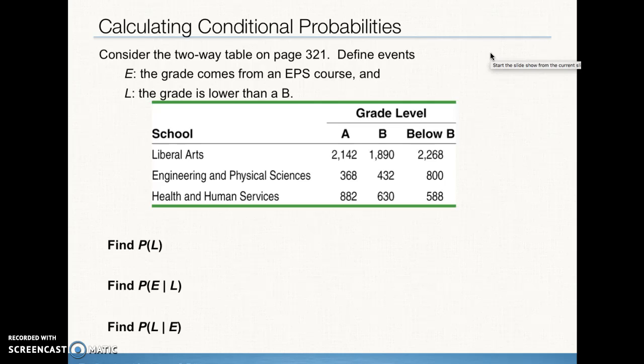The students at the University of New Harmony received 10,000 course grades last semester, and the two-way table we see here breaks down the grades by which school at the university taught the course. The choices of the schools are liberal arts, engineering and physical sciences, and health and human services. So, what do we see? When we look at A, B, and below B, we see that we seem to have a lot of below B proportionally in the engineering and physical sciences. Interesting, right? So, what we want to do, though, is we want to actually calculate the probability of L, which is a grade lower than a B, probability of E given L, or the probability that the grade comes from an engineering and physical sciences course, knowing that the grade is lower than a B. And we also want to calculate the probability of L given E, the probability that the grade is lower than a B, knowing that it comes from an engineering and physical sciences course.